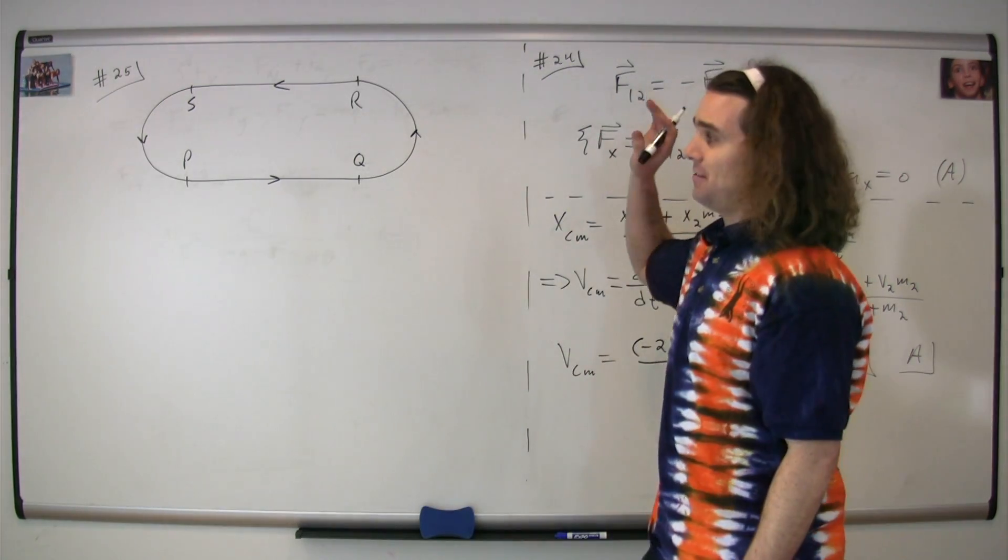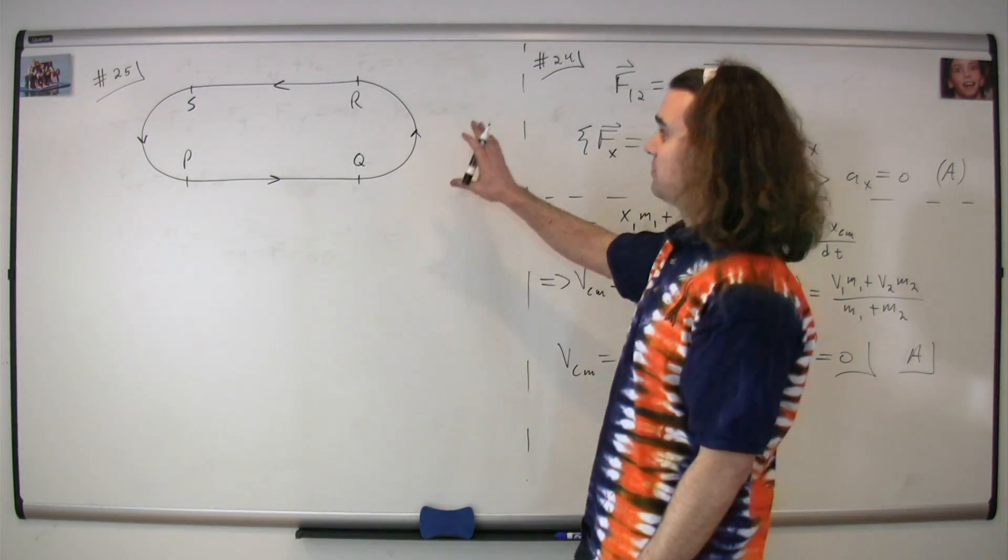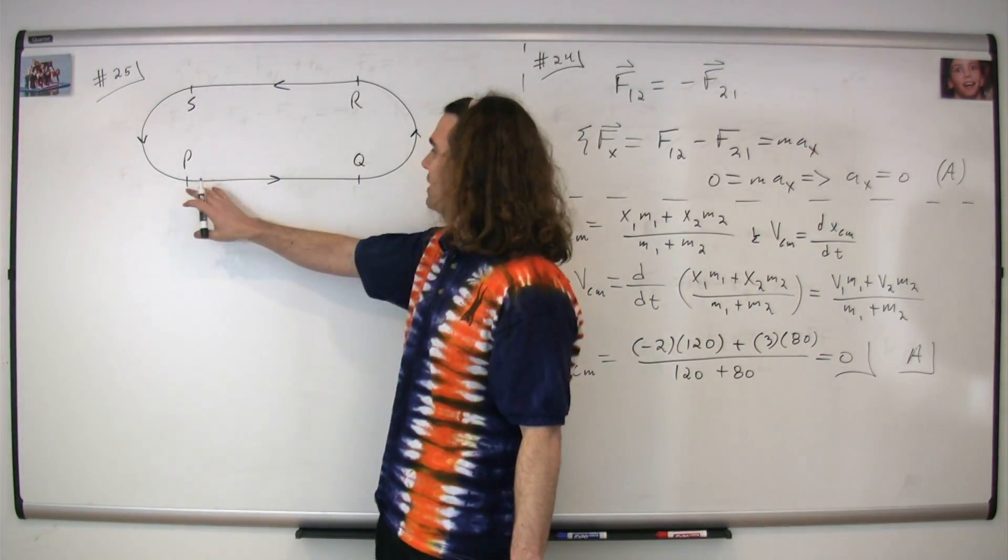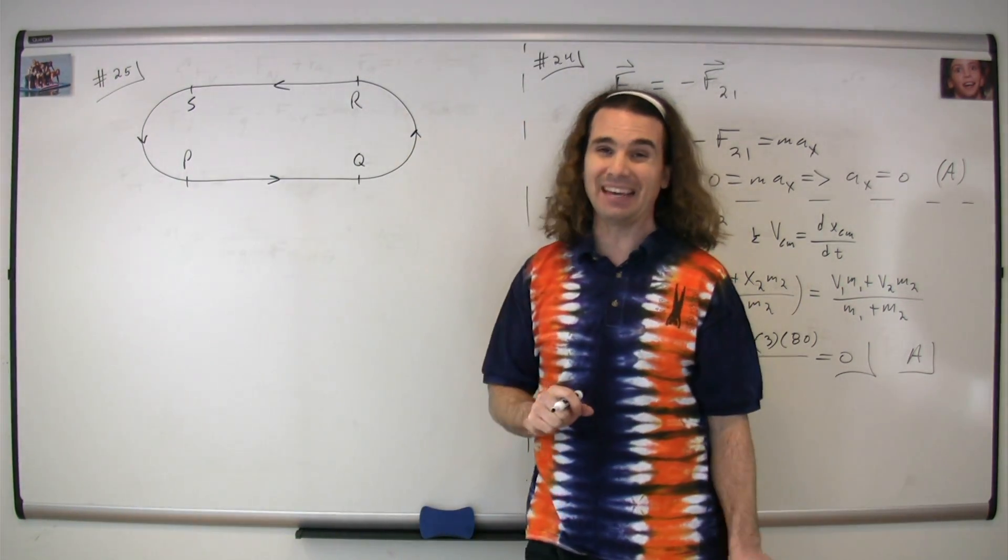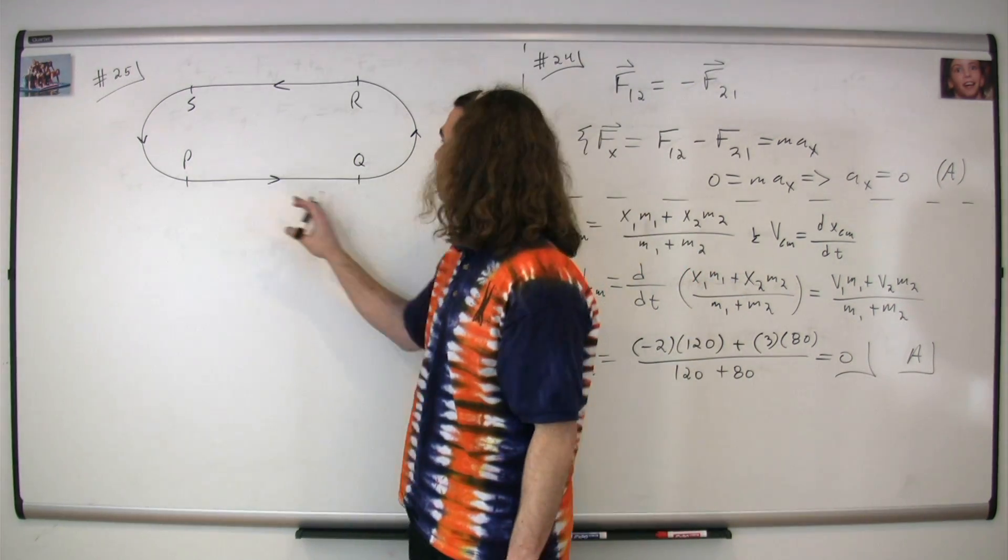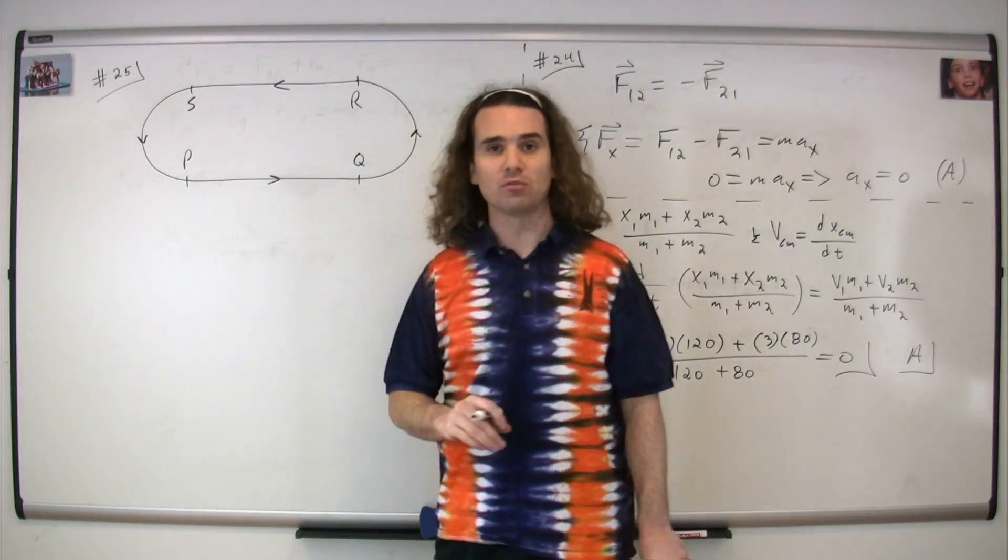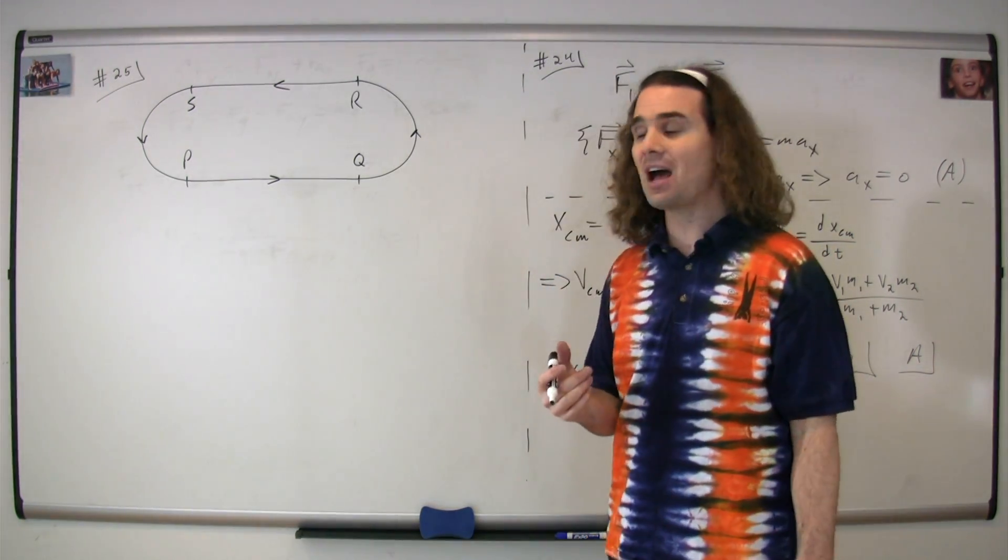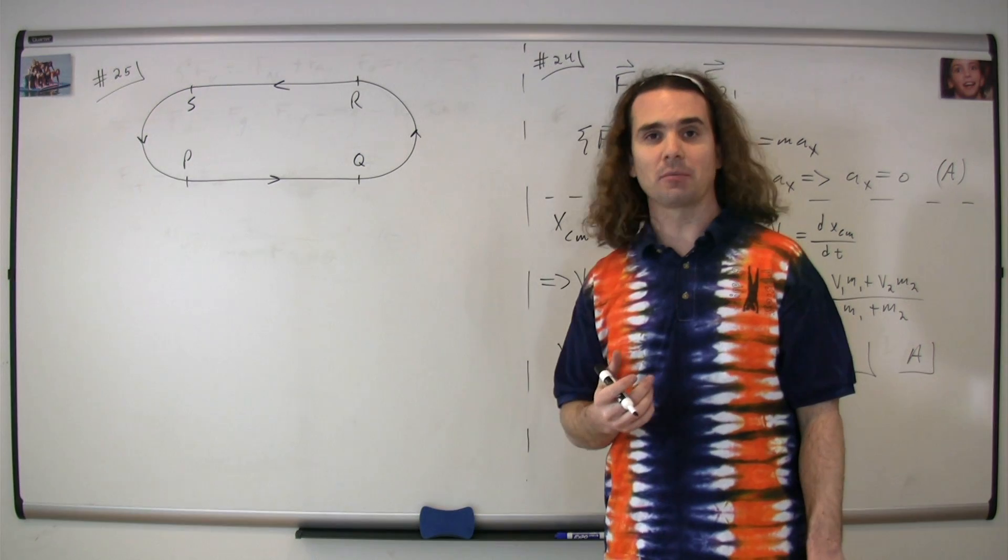Question 25. We have a figure on a music box moving in this sort of pattern. From s to p and from q to r, they move in a semi-circle. And from p to q and from r to s, it moves in a straight line. And we're trying to plot the acceleration as a function of time on this music box.